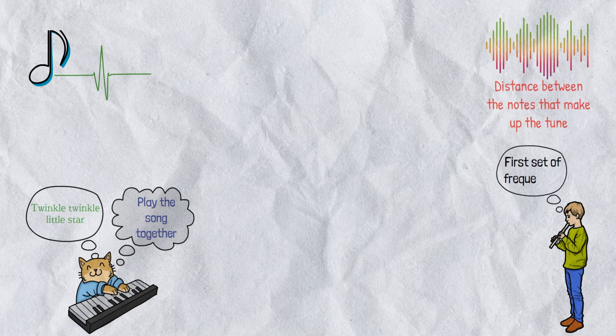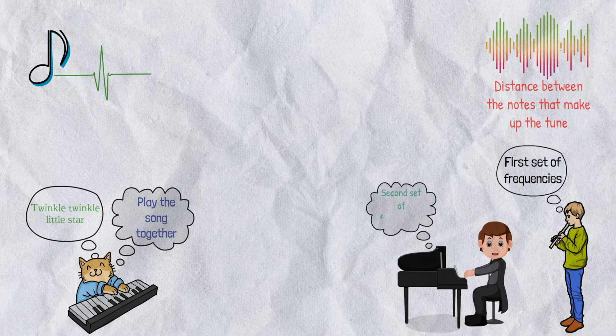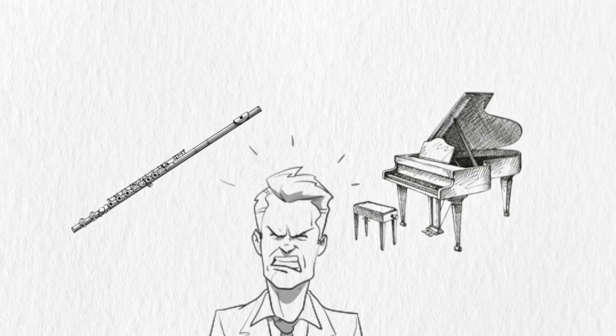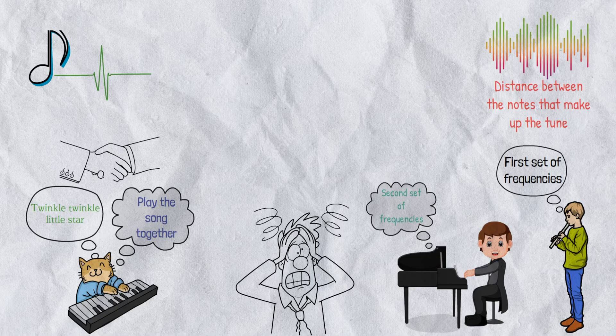Now imagine that a pianist and a flutist wanted to play the song together, but the flutist is going to play the song in the first key and the pianist is going to play the song in the second key. It would sound a little something like this. All this to say, when musicians want to make music together, they need to agree to tune their instruments to the same set of frequencies.